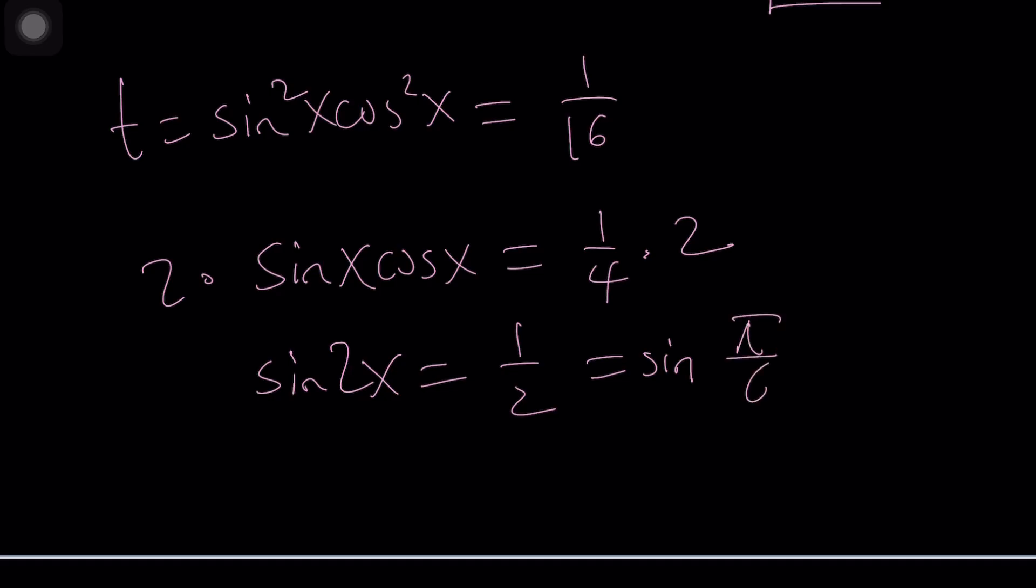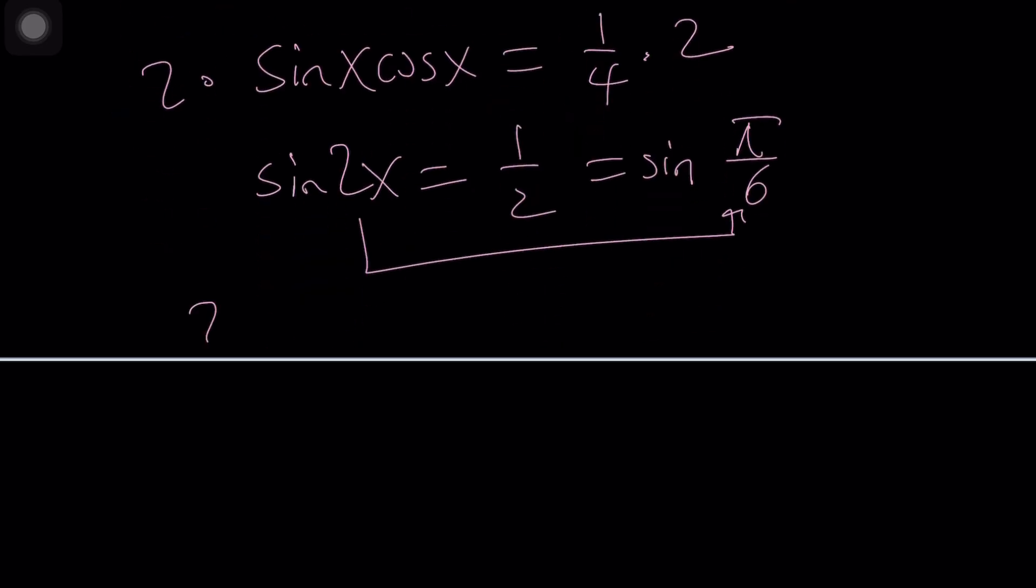Which is equal to sine of 30 degrees which can be written as pi over 6. And from here you can set up equations like 2x equals pi over 6 plus 2 pi n or 2x equals pi minus that so on and so forth. This will definitely give you solutions, one of which is going to be pi over 12, the other one is going to be 5 pi over 12.